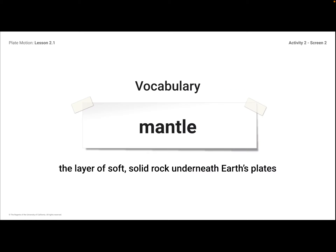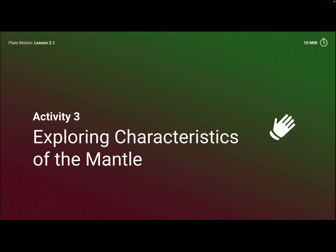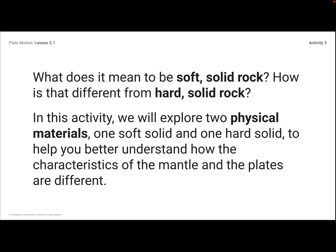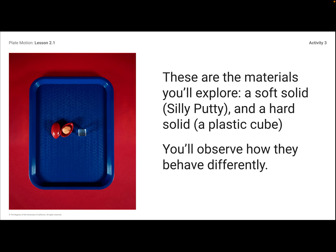We've got a new vocabulary word: mantle — the layer of soft solid rock underneath Earth's plates. The last activity we did today was Activity 3, exploring characteristics of the mantle. We talked about what it means to be soft solid rock. It's a hard thing to think about — it's not a liquid, it's still solid, but it's soft solid. How is that different from a hard solid rock? We took two physical materials, one hard solid and one soft solid, and compared them.